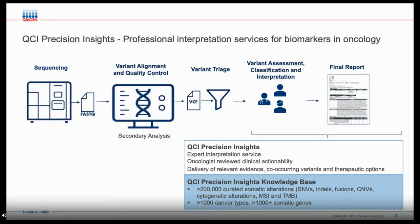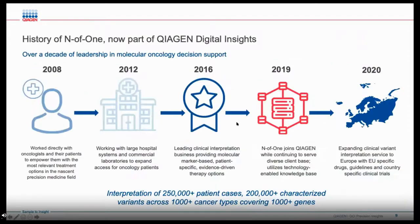QCI Precision Insights is a professional clinical interpretation service that complements the user interface in QCI Interpret and Kyagen's other bioinformatics solutions. QCI Precision Insights provides human analysis and expert interpretation, helping to expedite report preparation for small and large panels in both common and rare cancer types. It triages and summarizes content for lab director review to assist in report writing, identifying the key pieces of evidence from the literature and preparing written summaries for review. QCI Precision Insights is powered by the Kyagen group formerly known as NF1.